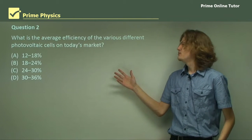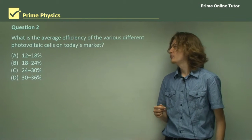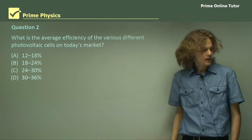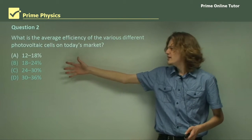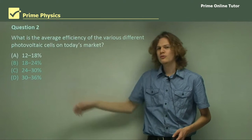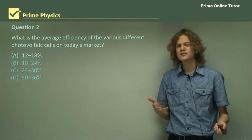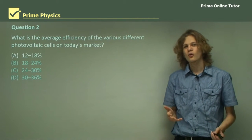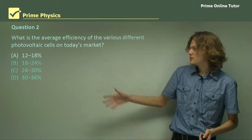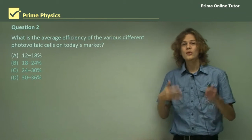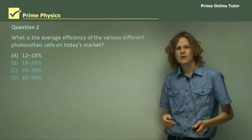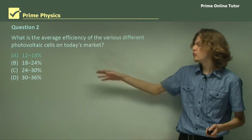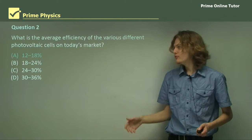Question 2: What is the average efficiency of the various different photovoltaic cells on today's market? We have four options going from about 12% to about 36%. It might seem at first that one of the higher options might be correct, because we know it's quite difficult to convert light into electricity, and even 36% is barely a third of the light energy being converted. But as it turns out, none of those higher options are correct. Certainly we've created photovoltaic cells with those efficiencies, but they aren't really available in today's market, and if they are, they're very expensive. The average efficiency is in fact closer to about 12% to 18%, which is the correct answer.